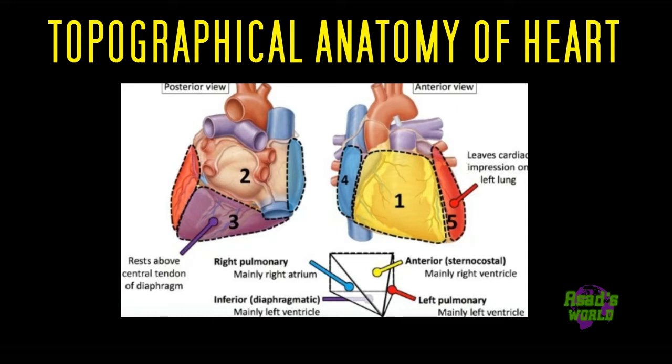Surfaces four and five are your right and left pulmonary surfaces respectively, and are composed of your right atrium and left ventricle respectively.